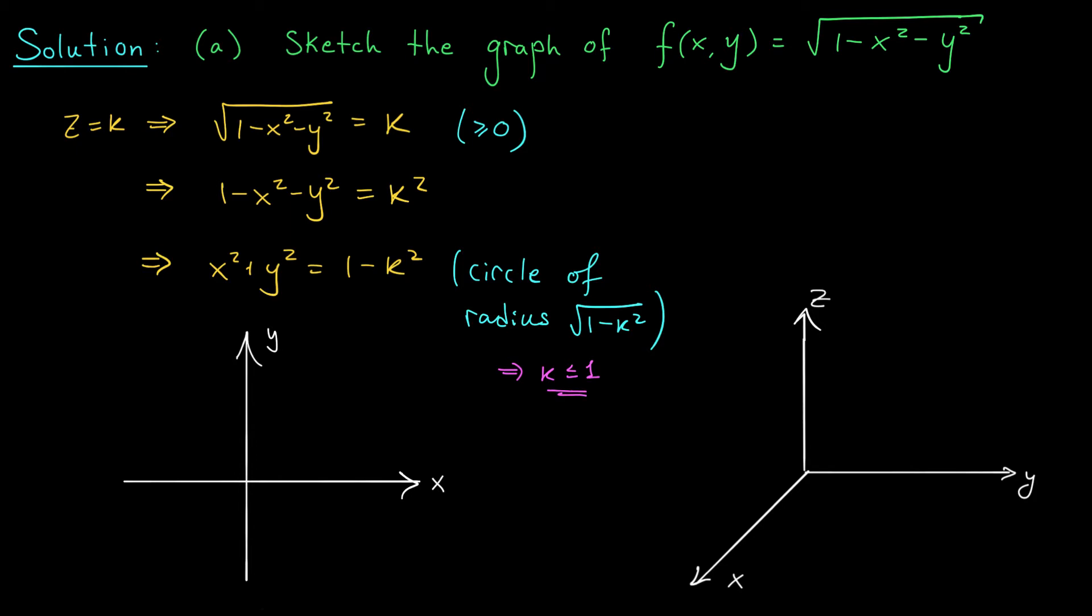Let's try plotting some of these level curves. When k is 0 we get a circle centered at the origin of radius 1. When k is say 1 half we get a slightly smaller circle centered at the origin. And we can keep doing this all the way up to k equals 1. At k equals 1 we actually just get a point. We just get the origin itself.